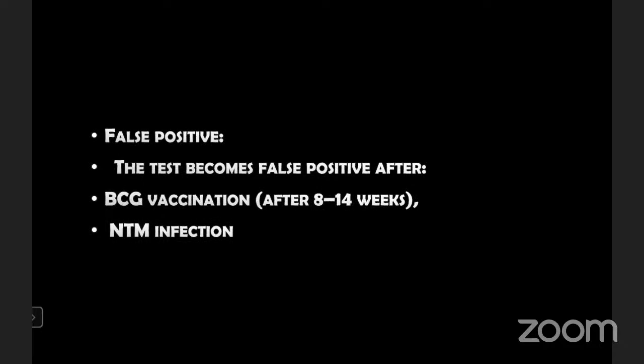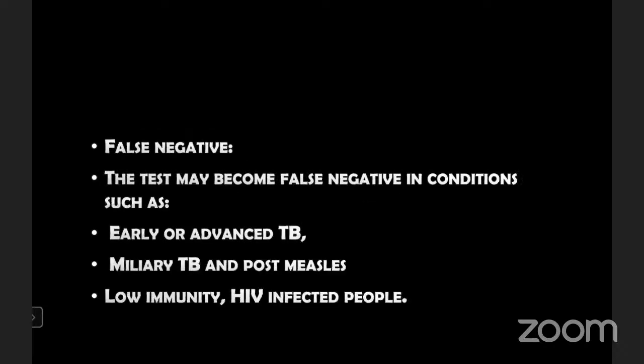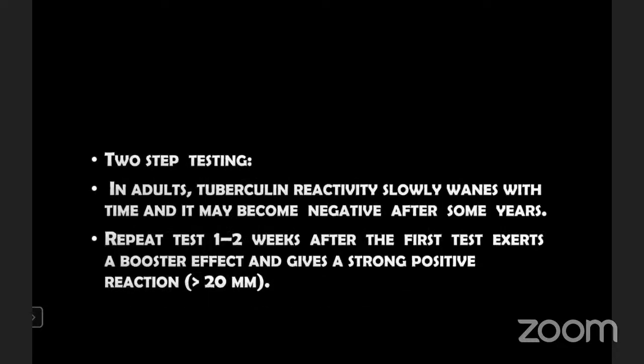Interpretation of tuberculin test results: in adults, a positive result indicates present or past infection with tubercle bacilli but does not confirm active disease; it is used as an epidemiological marker. In children, a positive test indicates active infection and is used as a diagnostic marker. False positive results occur after BCG vaccination or non-tuberculous mycobacterium infection. False negative results occur in early or advanced tuberculosis, miliary tuberculosis, post-measles, low immunity, and HIV-infected people. Two-step testing: in adults, tuberculin reactivity slowly wanes with time; a repeat test 1 to 2 weeks after the first test may show a booster effect with a strong reaction greater than 20 mm in width.